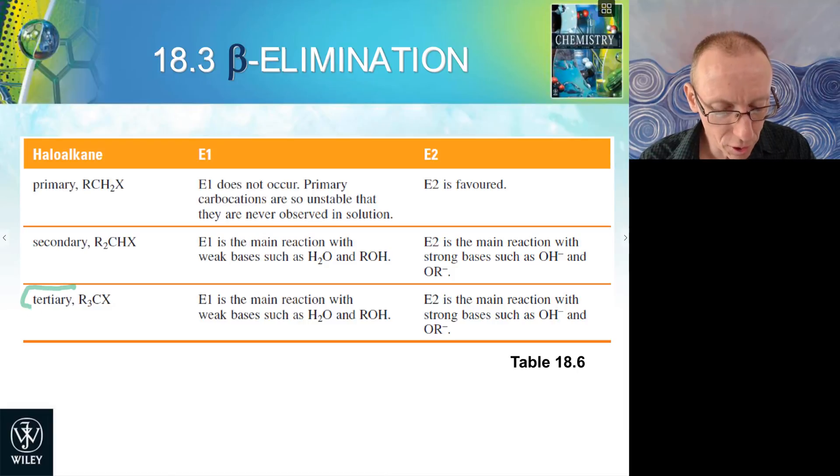Similarly, if we have a tertiary alkyl halide, E1 is the main reaction mechanism because we know that tertiary carbocations are relatively favored. And so weak bases such as water and alcohols will be involved in E1 reaction mechanisms that involve tertiary carbocations. However, a bit different to nucleophilic substitution reactions, E2 can be the main reaction profile when we have strong bases such as hydroxide or alkoxides.